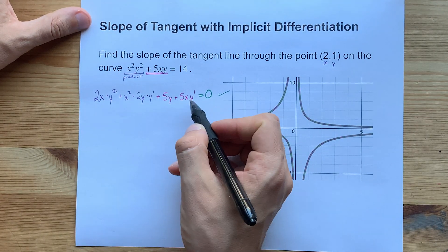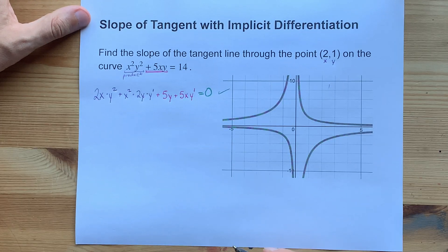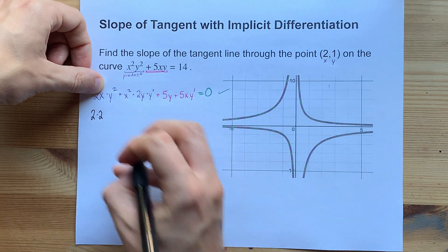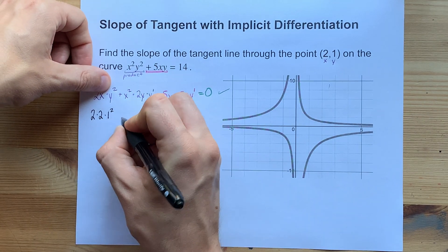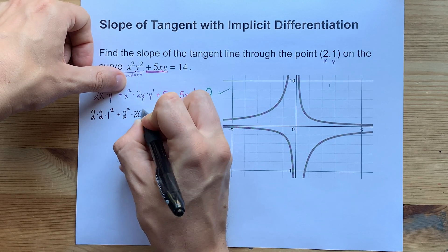You don't even have to clean this up first, although cleaning it up first is like the professional way to do it. So I've got 2 times x, which is 2, times y² plus x² times 2y.